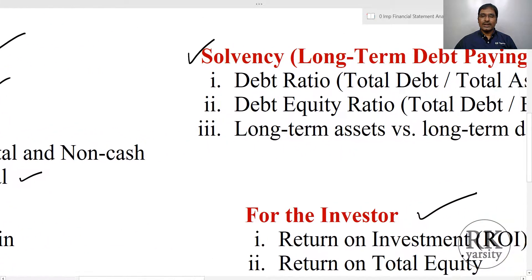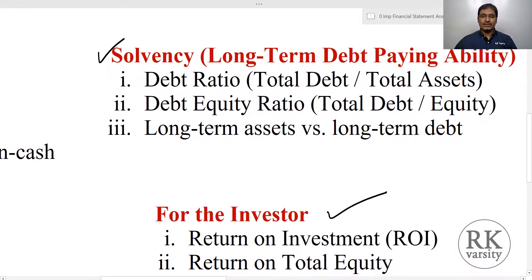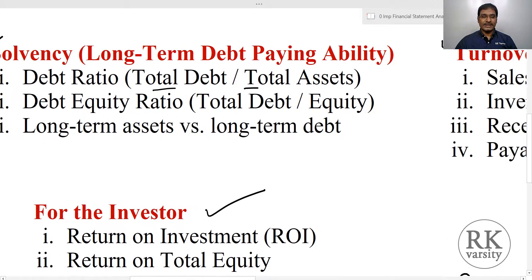When it comes to solvency ratios, we are covering three ratios. One is the debt ratio, which measures the relationship between total debt and total assets. Then the debt-to-equity ratio. Then the long-term assets versus long-term debt ratio.